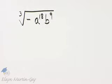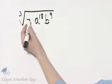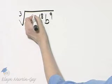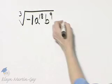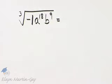We want to simplify this expression. By the way, if this negative is bothering you, think of this as negative 1, a to the 18th, b to the 9th. And then we'll treat all of these separately.